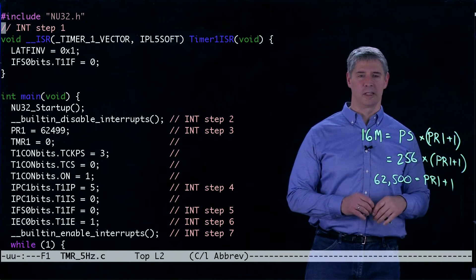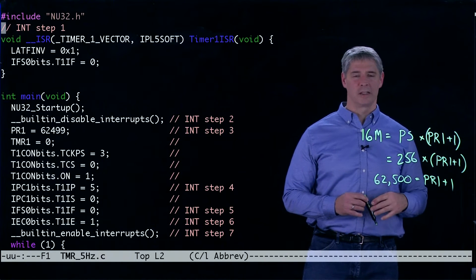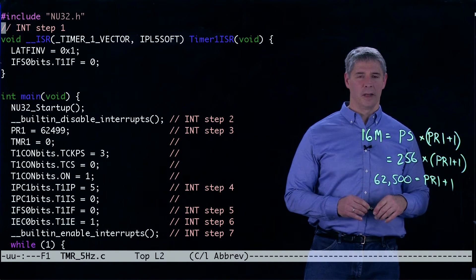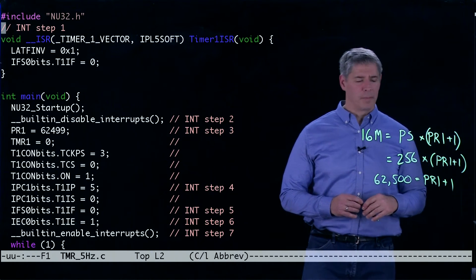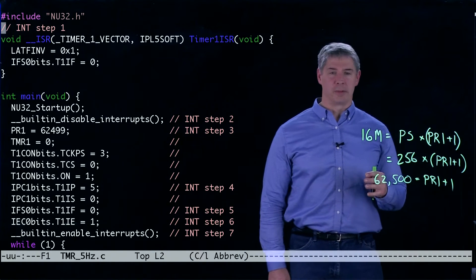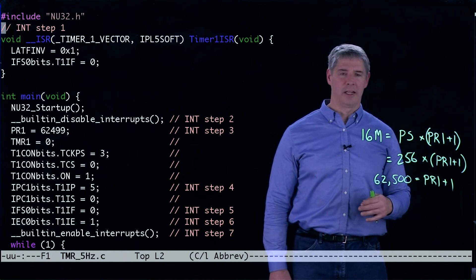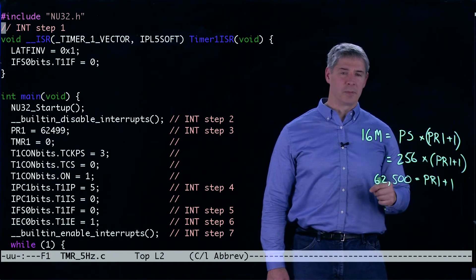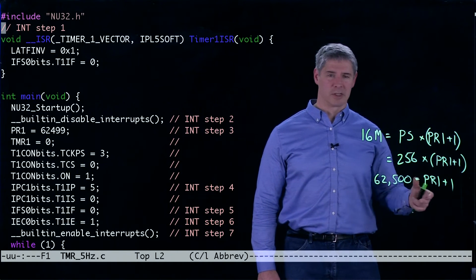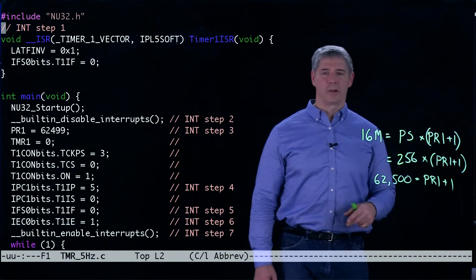So we can use a single 16-bit timer to implement this 5 hertz interrupt service routine. We're going to use the peripheral bus clock also coming in at 80 megahertz as the input to the timer instead of using some external source. So here is the code.